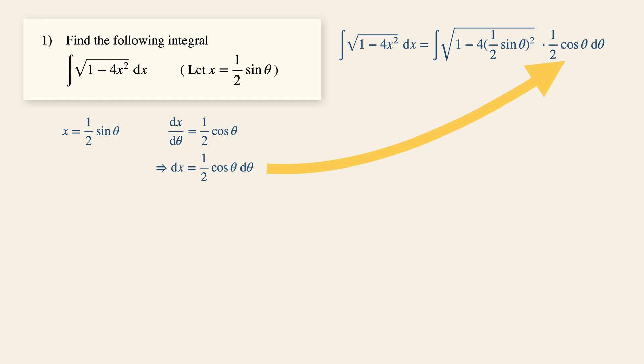Now you notice that in this expression, all the x has been transformed into theta. Let's continue to simplify this expression. We will then have 1 minus sine squared theta in the square root, multiplied by half cosine theta d theta, and this will give us half integrate cosine squared theta d theta.